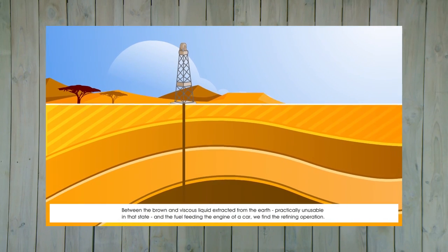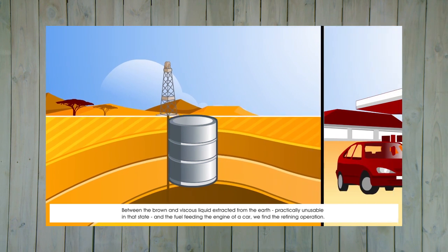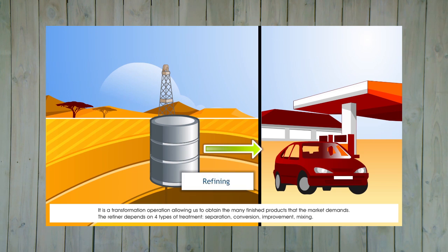Between the brown and viscous liquid extracted from the earth, practically unusable in that state, and the fuel feeding the engine of a car, we find the refining operation. It's a transformation operation allowing us to obtain the many finished products that the market demands.